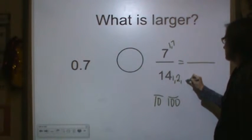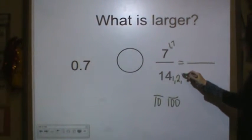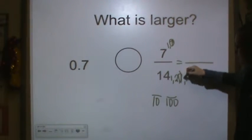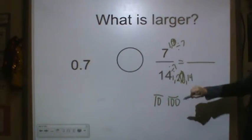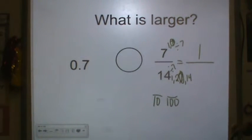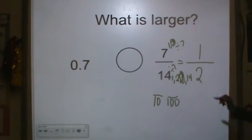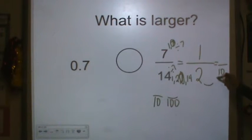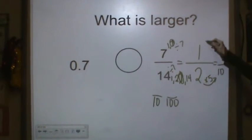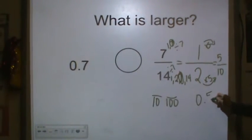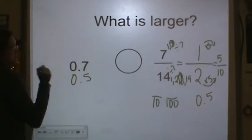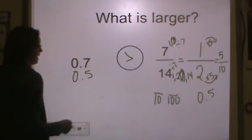You write the factors of both numbers, your numerator and denominator. You circle the greatest common factor and you divide by that greatest common factor. So 7 divided by 7 is 1. 14 divided by 7 is 2. Now 1 half I know I can get into tenths really easily. Because 2 times 5 is 10 and 1 times 5 is 5. Now 5 tenths I can write as a decimal. And I can compare. 7 tenths is greater than 5 tenths.